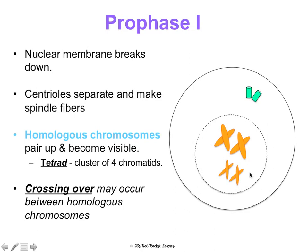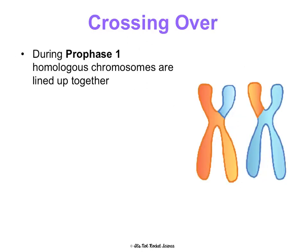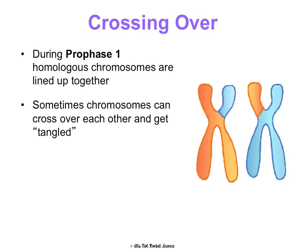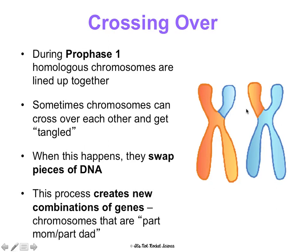Notice there would actually be 46 chromosomes in a human's version of this — 23 pairs — but that would be a really complicated diagram, so we're just going to show four chromosomes, or two homologous chromosome pairs. Crossing over: during prophase I, because the homologous chromosomes are all lined up and paired together, sometimes they can get crossed over and tangled. When this happens, they can swap pieces of DNA, and this creates new combinations of genes in the chromosomes that are part mom and part dad. This is one way we get genetic variation.